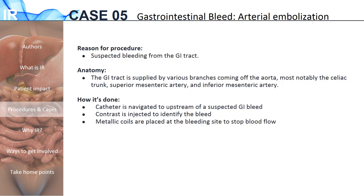The next case we will be discussing is embolization to stop GI bleed. The gastrointestinal tract is a common source of internal bleeding. It is often clinically diagnosed by the presence of blood in the stool, coughing up blood, or an unexpected decline in blood pressure or hematocrit. Interventional radiology can be used in the management of GI bleeds by performing coil embolization of the bleeding artery. In this procedure, a small catheter the size of a spaghetti noodle is threaded through the arteries toward the suspected site of bleeding. Contrast is injected to verify the bleeding vessel, and once identified, metal coils are inserted into the artery to occlude the vessel and stop the bleeding.